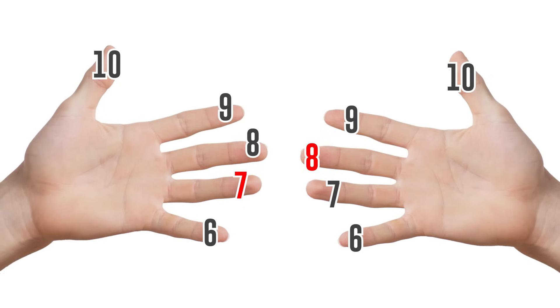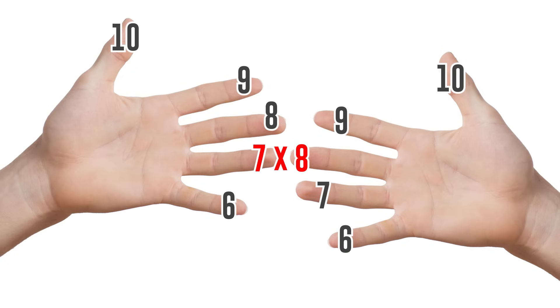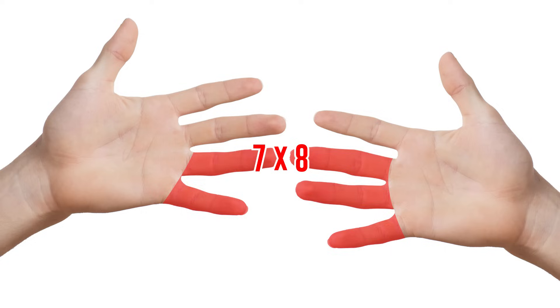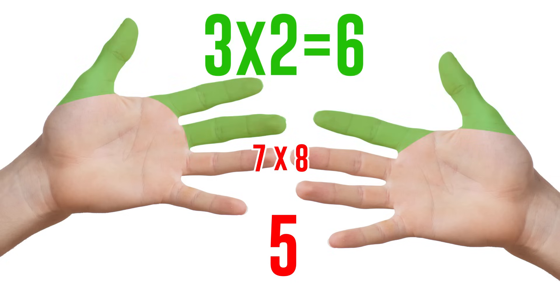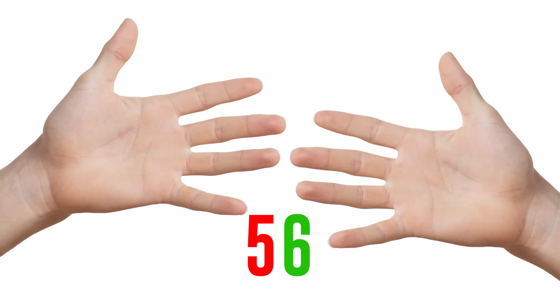The number of fingers at the bottom, counting along with the connected ones, means tens. We get 5 of them. As for the fingers located at the top, you need to multiply them among themselves. They mean units. In our case, multiply 3 by 2. The answer is 7 times 8 equals 56. This way you can quickly multiply by 6, 7 and 8.